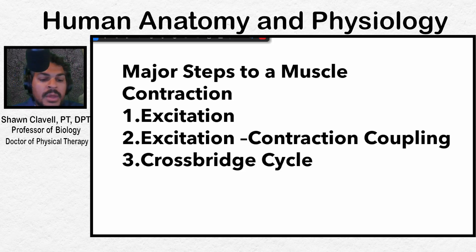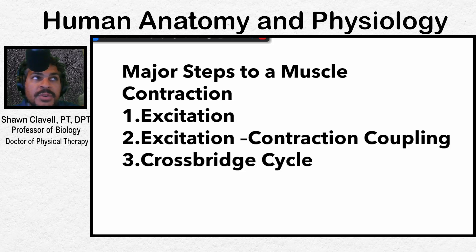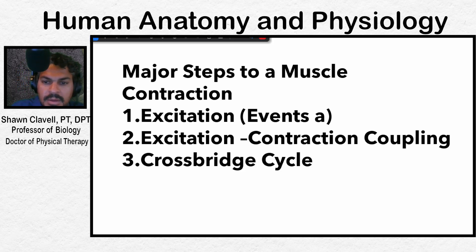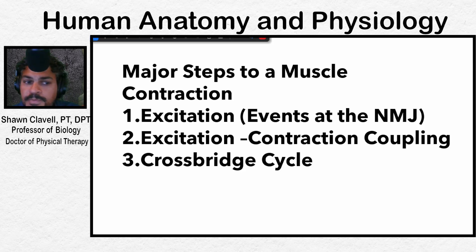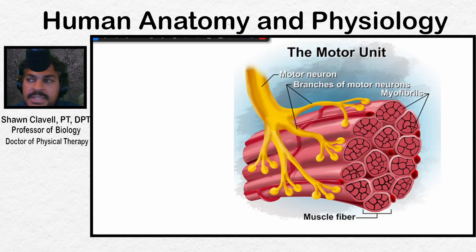If you recall, when we talk about excitation, what we're talking about is the stimulation of a muscle by a nerve. A nerve will send a neurotransmitter. We might also call this the events at the neuromuscular junction, or NMJ for short. The idea is that there is a nerve that stimulates every muscle.